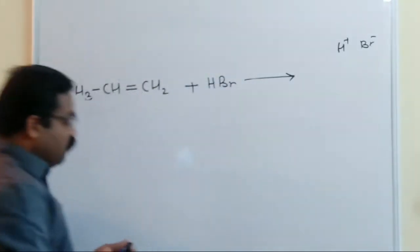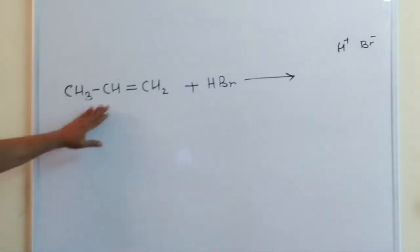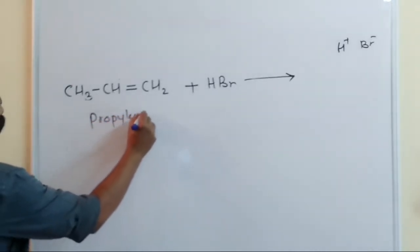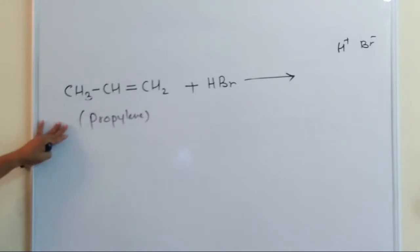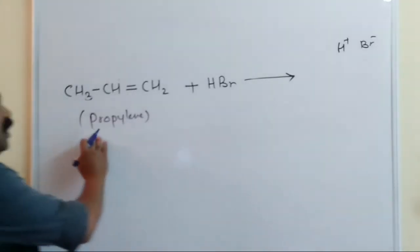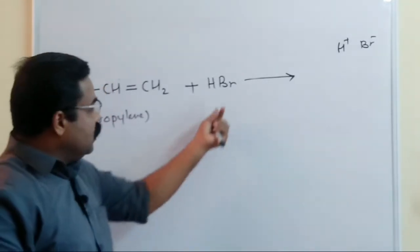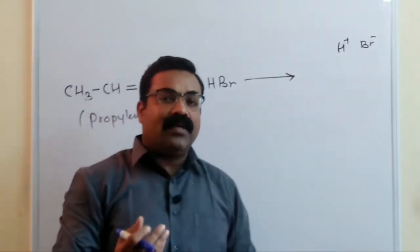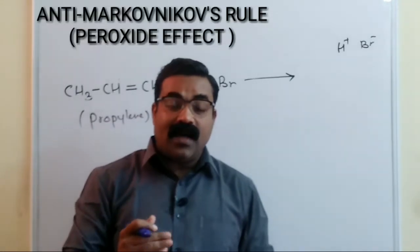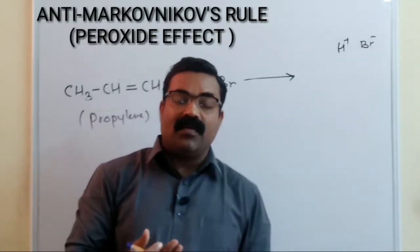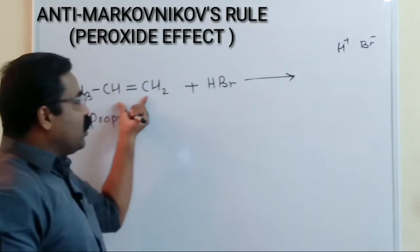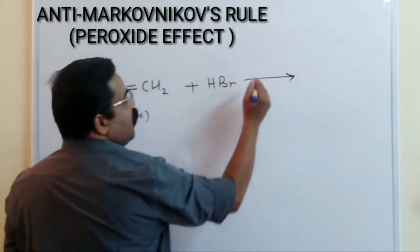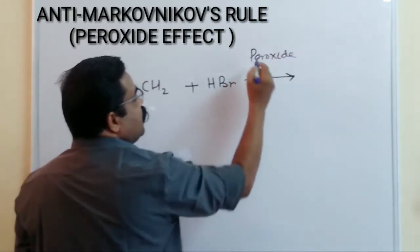Now let us take the same reaction again: CH3-CH=CH2, propylene, reacting with hydrogen bromide. We have seen that according to Markovnikov rule, the negative part of the addendum goes to the carbon with fewer hydrogens. But now we are going to see what anti-Markovnikov rule is. This anti-Markovnikov rule is also known as the peroxide effect. Suppose this reaction takes place in the presence of a peroxide — for example, benzoyl peroxide.